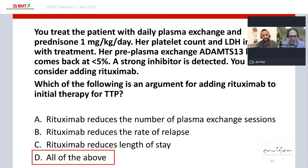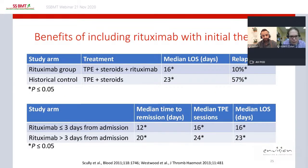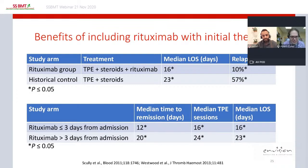The best answer is all of the above. Two historical UK observational studies support this. In the first, patients treated with plasma exchange, steroids, and rituximab versus a historical control group treated without rituximab showed that the rituximab group had a shorter median length of stay — 16 versus 23 days — and a markedly reduced relapse rate of 10% versus 57%.